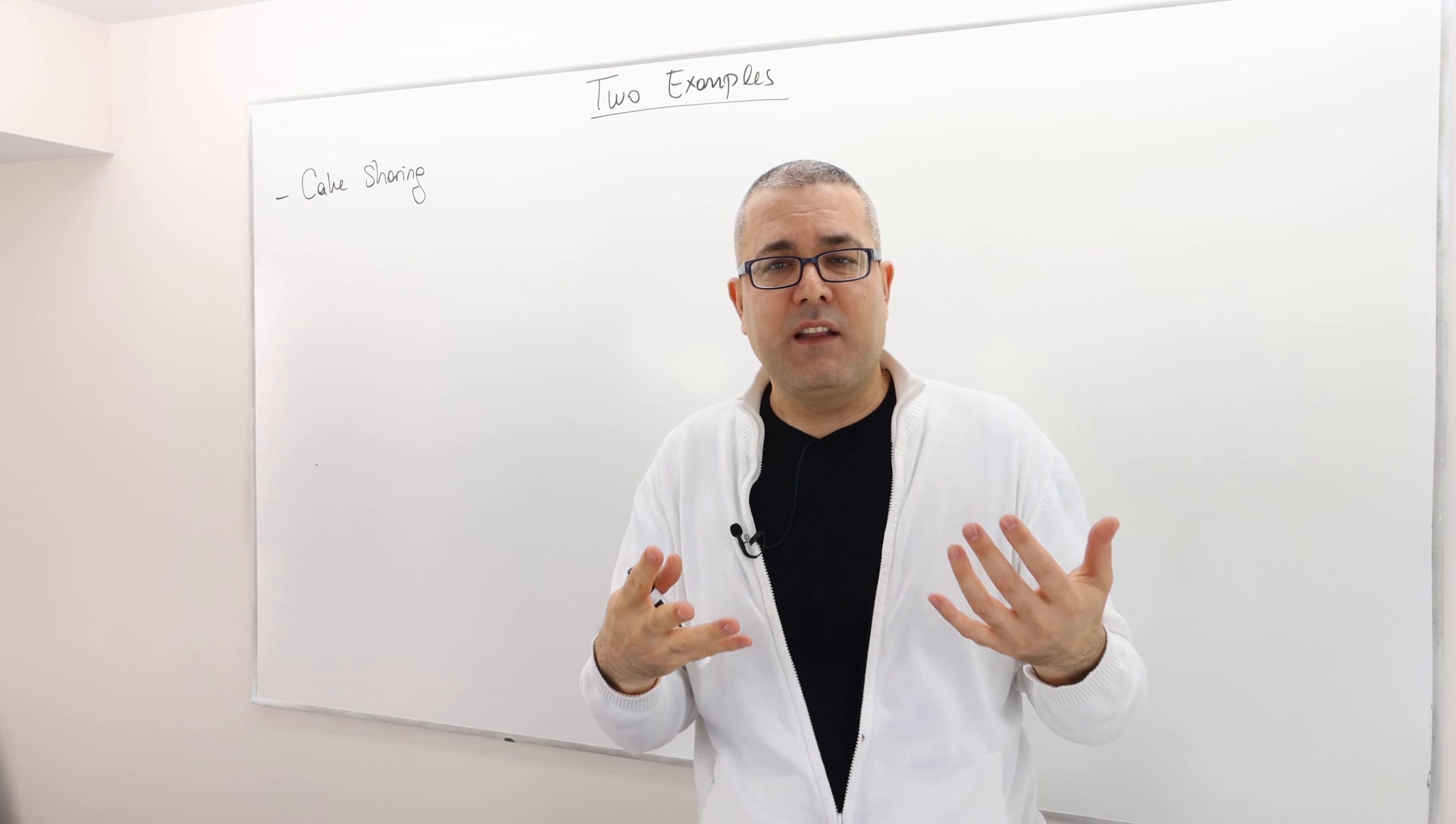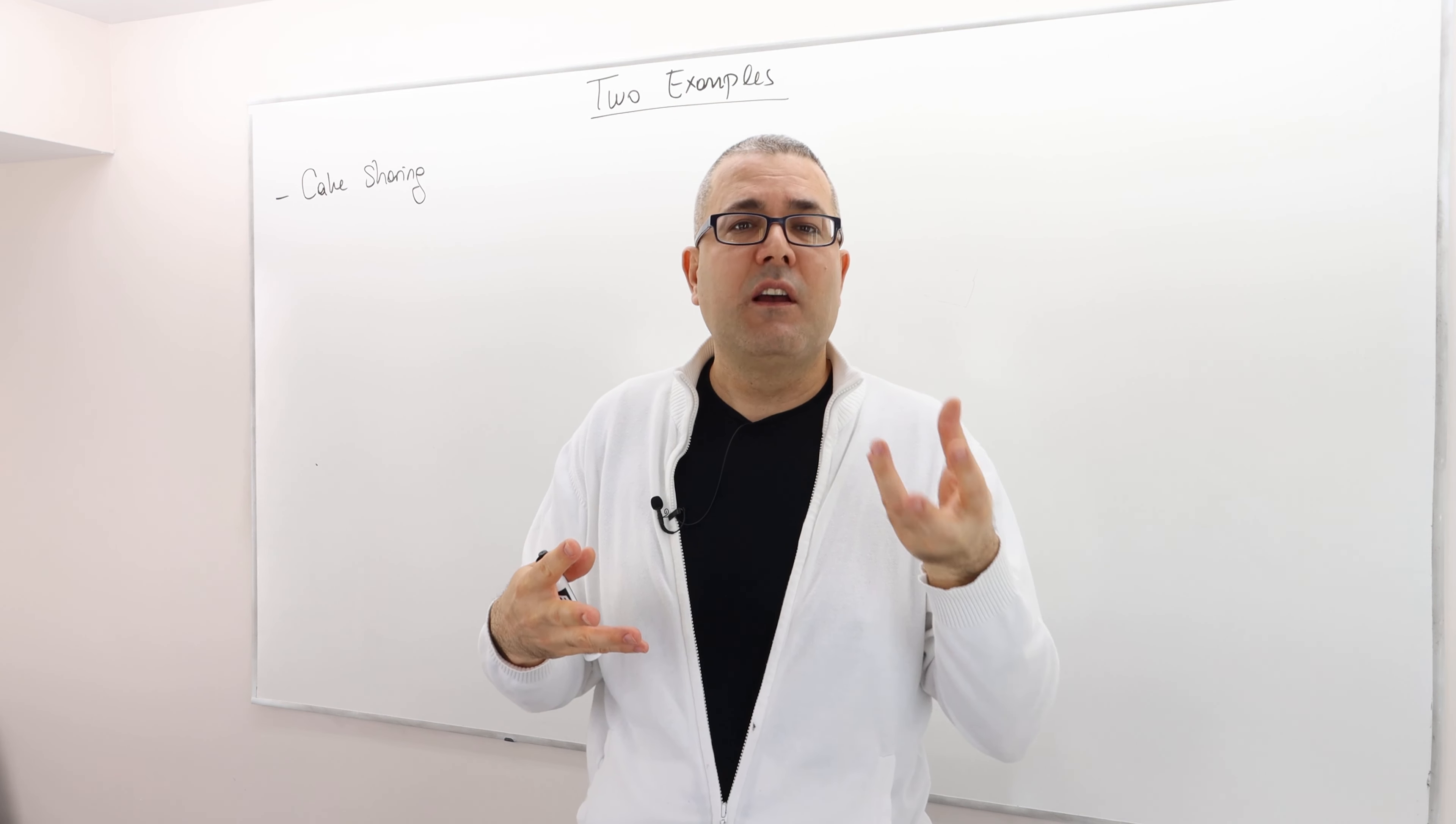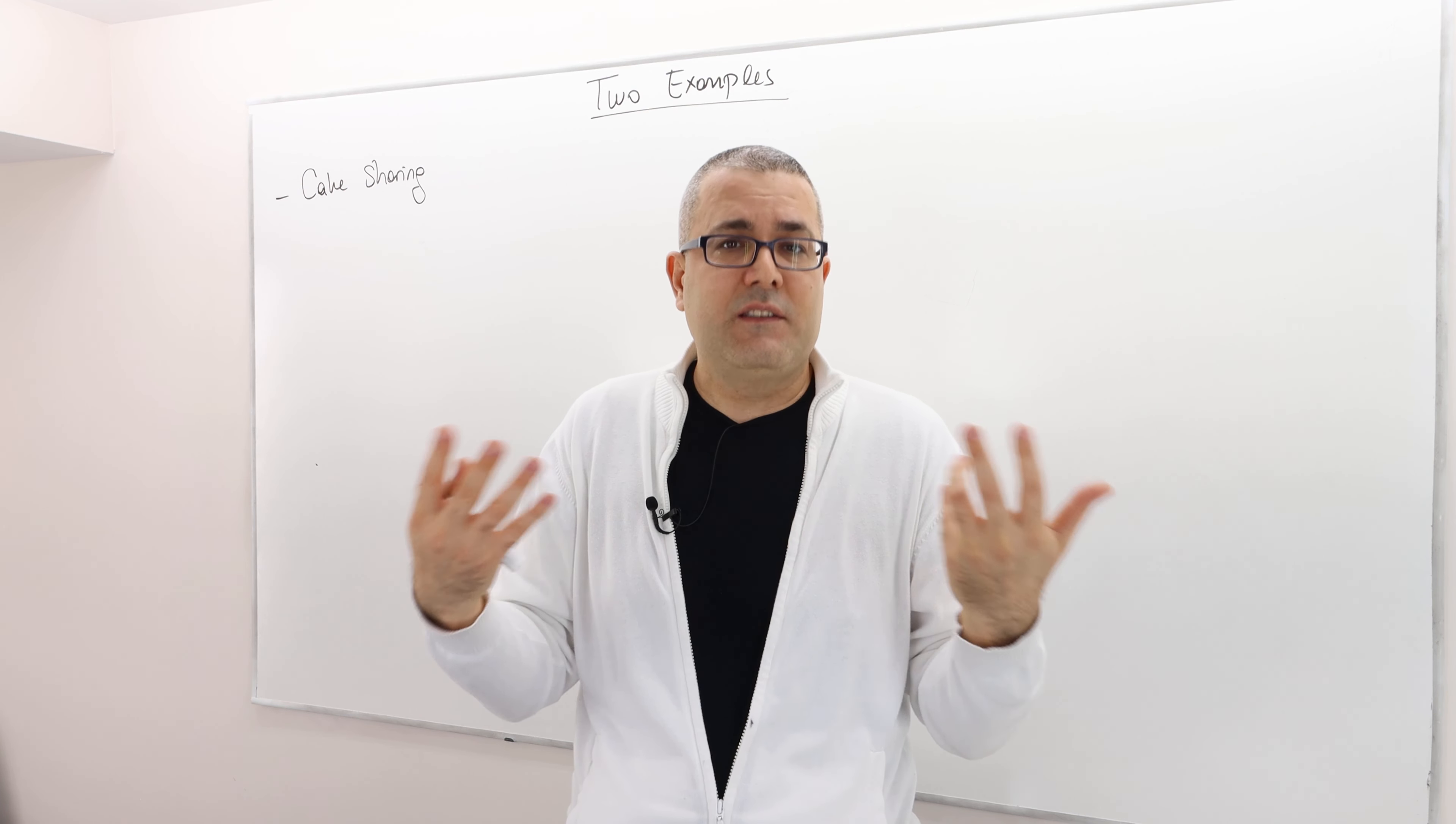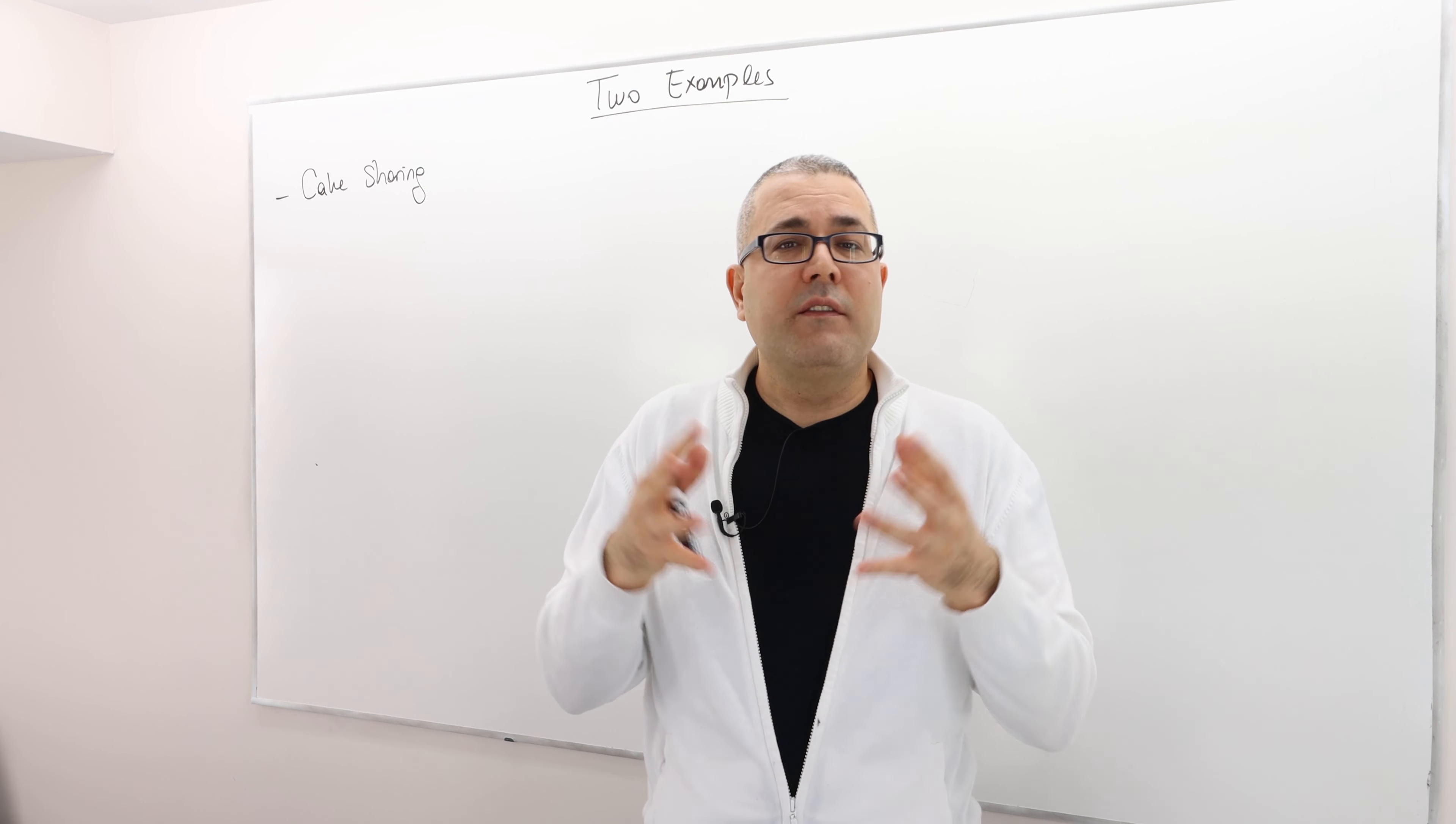So what happens is that Bob actually therefore gets a piece that was equally likable with the Alice's piece and Alice actually gets the best piece that she could ever had. You see what I mean?